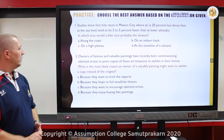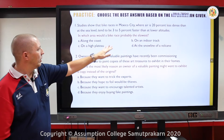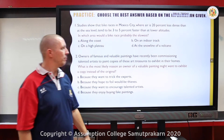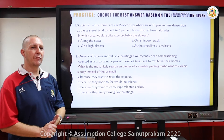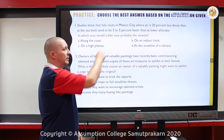Choose the best answer based on the information given. Number one, in which area would a bike race probably be slowest? Look at the four possible answers and choose A, B, C, or D. Number two asks: what is the most likely reason an owner of a valuable painting might want to exhibit a copy instead of the original? Note down your answers for one and two — pause if you want.